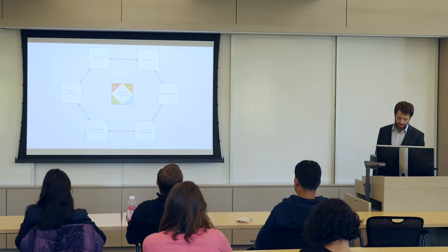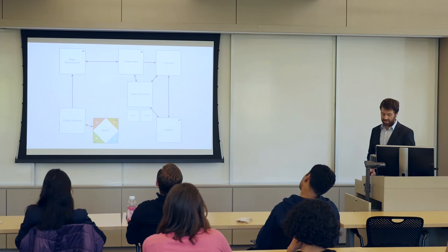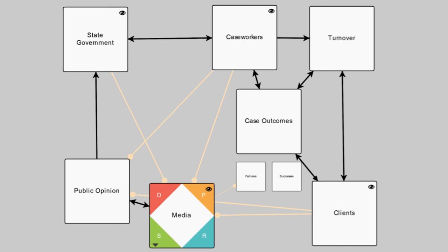Using metamaps, this is the final one. Basically using metamaps, I attempted to articulate the system caseworkers function or don't function in. This got messy and I can't really go into the details, but I can give you one aspect that I found very interesting. Going back to the Rubik's Cube idea, you couldn't solve a Rubik's Cube if you didn't know how many sides there were and what each side looked like.